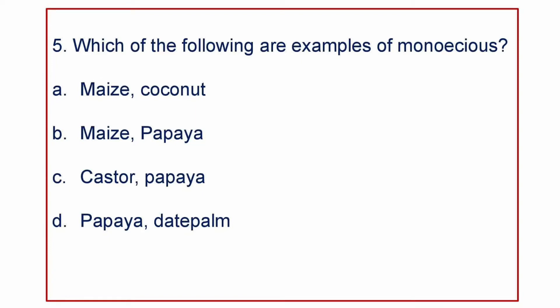Next question: which of the following are examples of Monoecious? A) Maize and Coconut, B) Maize and Papaya, C) Castor and Papaya, or D) Papaya and Date Palm. The answer: Maize and Coconut are Monoecious, while Papaya and Date Palm are Dioecious.